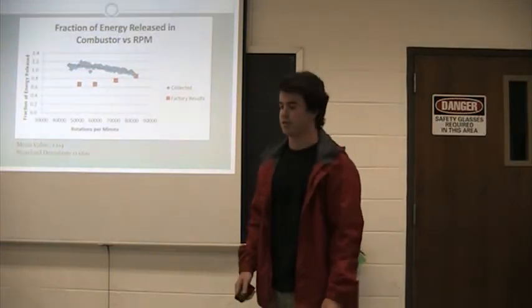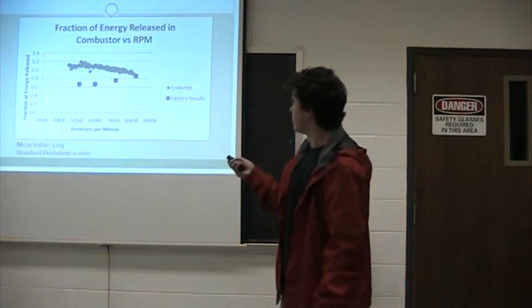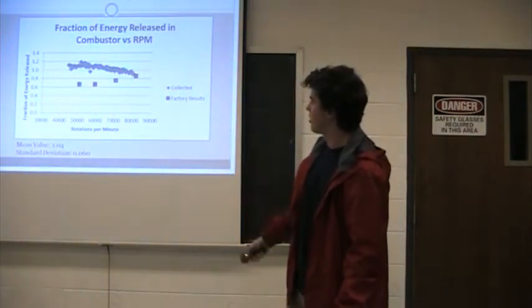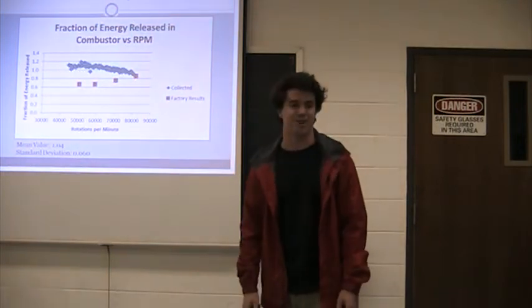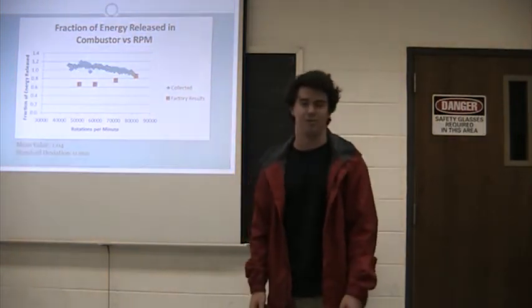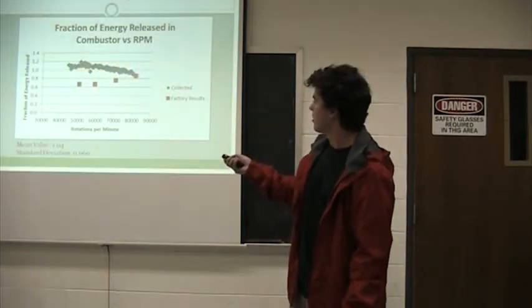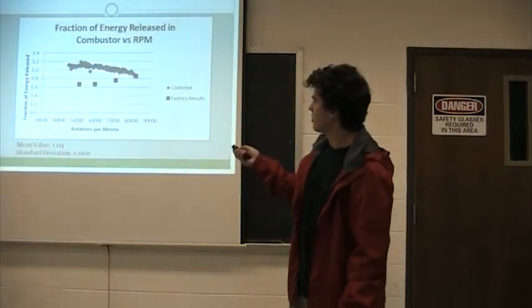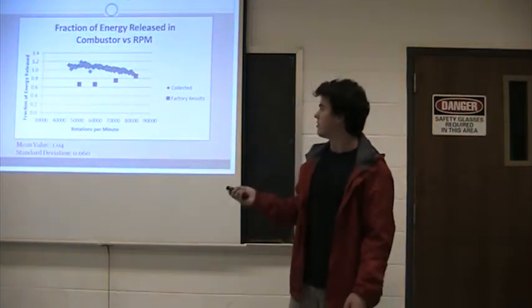On to the fraction of the energy release of the combustor. Again, in my calculations, I know my calculations are off. I have fractions of over one. I can't really understand why this is happening. Before the experiment, I might have some more insight as to why these calculations are wrong. But the factory result is what I expected. As the RPMs increase, we're getting closer to 100% efficiency in combustion.